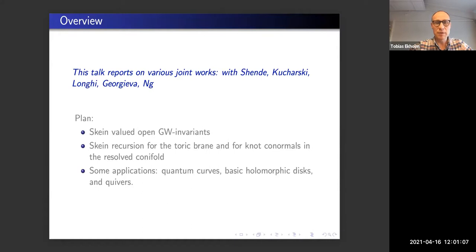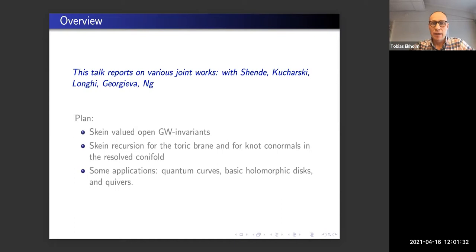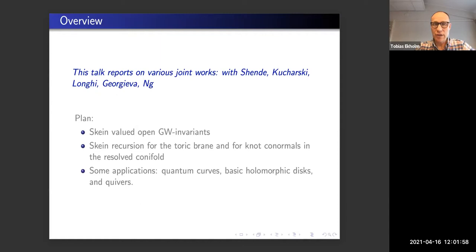The main starting point for all these projects is HOMFLY-valued curve counts — HOMFLY-valued open Gromov-Witten invariants. I'm going to go over that briefly, show you in some simple examples that it's actually fairly useful, and that you can count curves by approaching things from infinity. Towards the end, I'll try to apply this perspective and tell you how these curves, in particular for knot co-normals, come organized in some version of Gopakumar-Vafa conjectures.